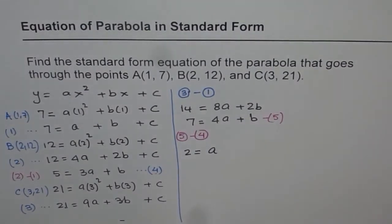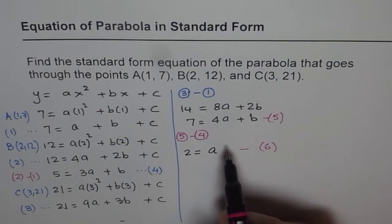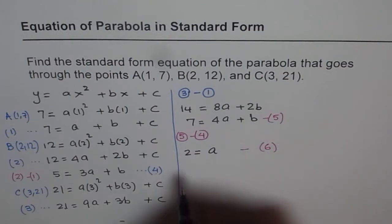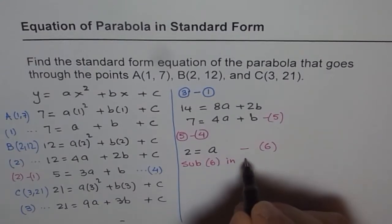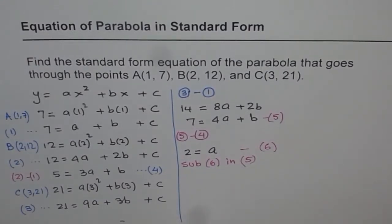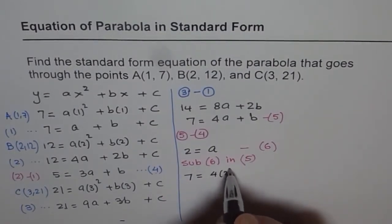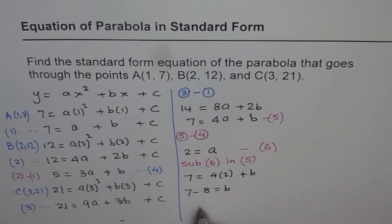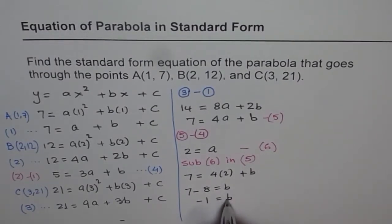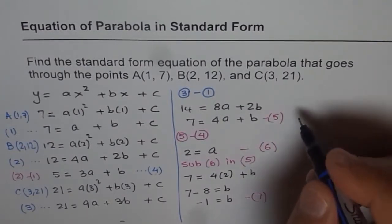Now, once we get a equals 2, we can write this equation as equation 6. We can substitute a in one of our equations with two variables and find b. So let me substitute a equals 2 from equation 6 in 5. So we get 7 equals 4 times 2 plus b, or 7 minus 8 equals b, which gives us value of minus 1 for b. So we get equation 7 where b equals minus 1.